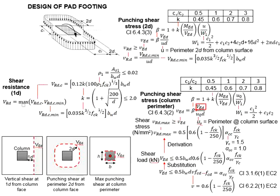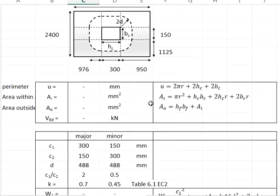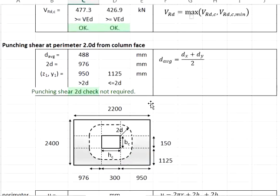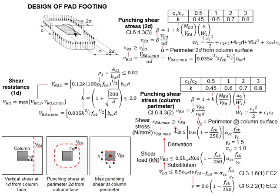Having the perimeter, we need the effective depth. We will use the average effective depth of the major and the minor axis, which is equal to 488 mm. Then we need to consider the beta factor.